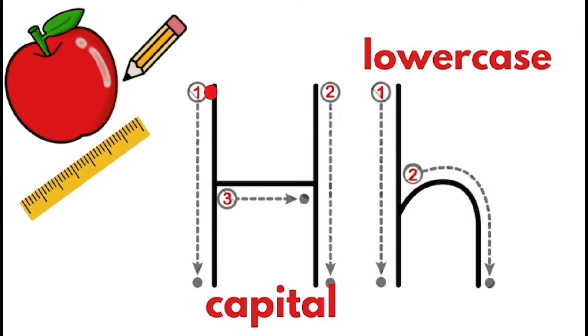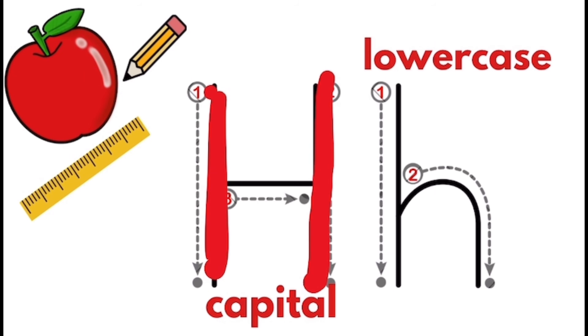Draw a dot anywhere on your paper. Feel free to pause or rewind if you get stuck and remember to have fun. Start at the dot and write a line down and stop. Draw a dot on the other side and write a line down and stop. Now write a line across connecting both lines.